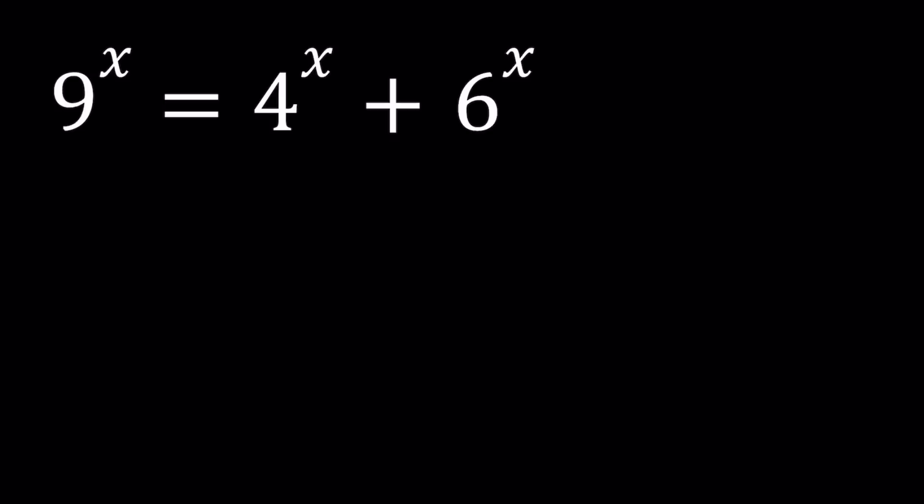We've done similar problems before. To solve these kinds of equations, one of the things I want you to pay attention to is the fact that these numbers are not random. If you multiply, for example, 4 and 9 together, 4 times 9 gives you 36, which is 6 squared. So let's see how that plays out.